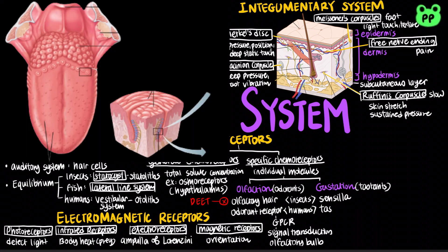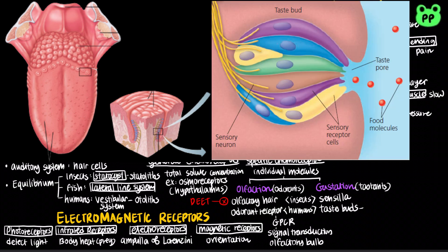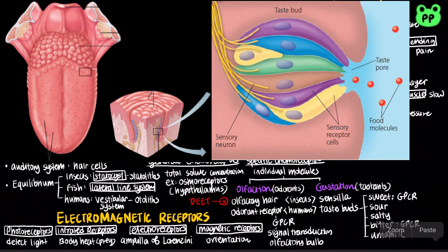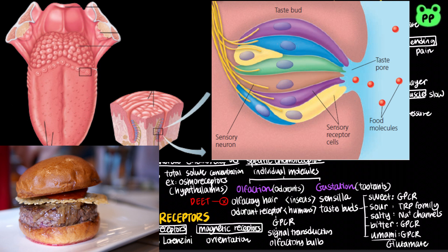In humans, taste receptors are modified epithelial cells organized into taste buds. There are five taste perceptions: sweet, sour, salty, bitter, and umami. The sensation of sweet, umami, and bitter taste require a G-protein coupled receptor. The receptor for sour tasting belongs to the TRP family, which stands for transient receptor potential family. The taste receptor for salt is a sodium channel. Umami receptors typically respond to glutamates and nucleotides, which are widely present in meat broths and fermented products.